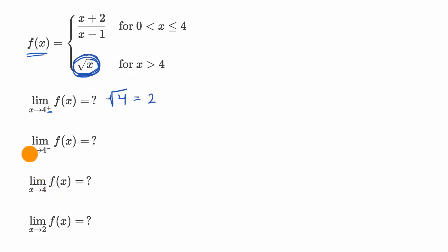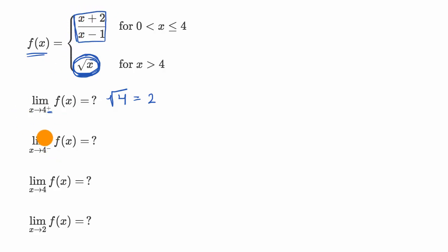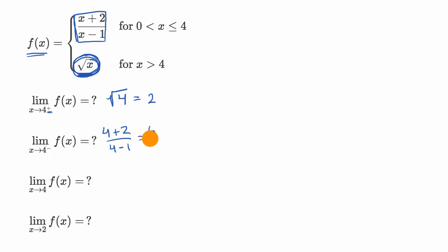What about our limit of f of x as we approach four from the left? Well, then we would use this part of our function definition. And so this is going to be equal to four plus two over four minus one, which is equal to six over three, which is equal to two.